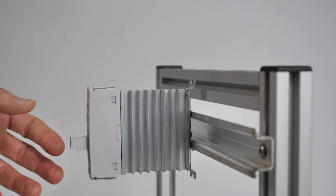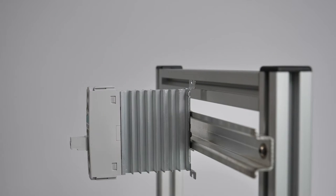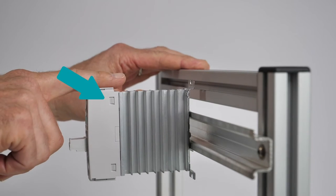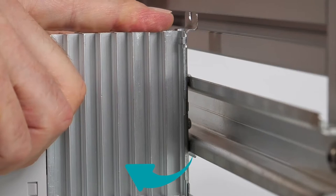Dismounting: For dismounting, apply slight pressure at the top against the DIN Rail and swing it out at the bottom.